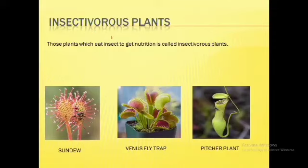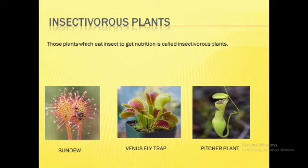Next are insectivorous plants. These are plants that eat insects. An example is the Venus flytrap. Insects come to the plant and the plant traps and eats them. These plants depend on insects for their nutrition and are called insectivorous plants.